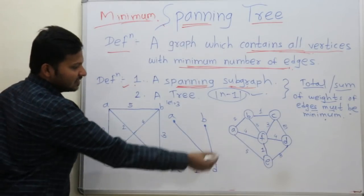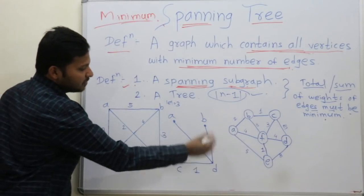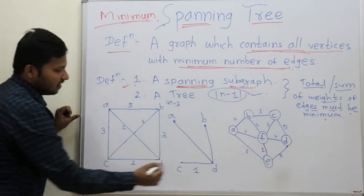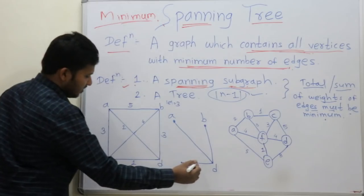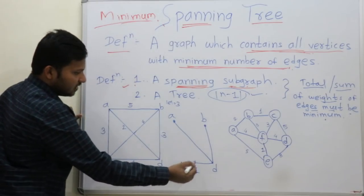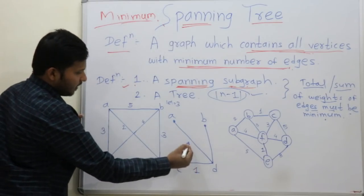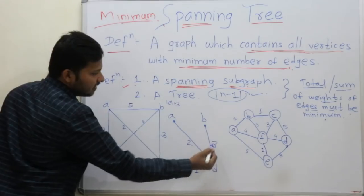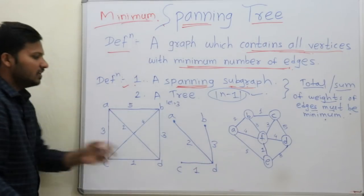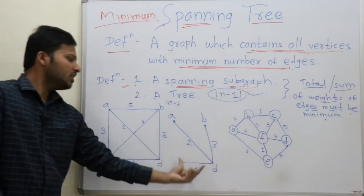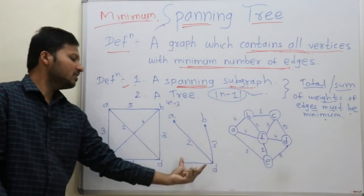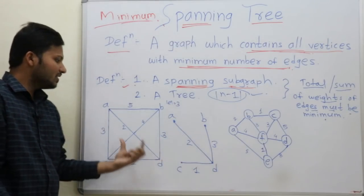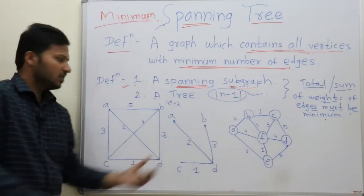Here is the minimum spanning tree. The weights are 1, 2 and 3. This is the minimum spanning tree for this graph.